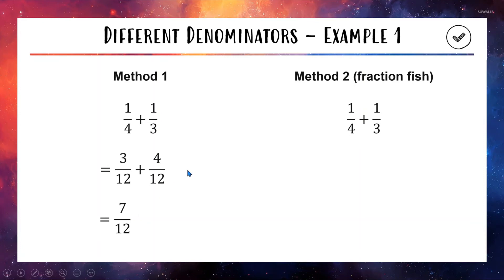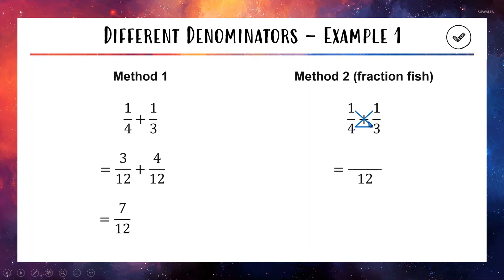If you're struggling with equivalent fractions, here's Method 2 — I call it the fraction fish, a kind of shortcut. You draw a shape that looks like a face-down fish over your fractions, with lines reminding you what to multiply. The fish face line does 4 times 3, giving you 12 on the bottom. The next line joins the 3 and the 1: 3 times 1 is 3 for the top left. Then with the plus sign, the last line gives 4 times 1 equals 4. Tidying up: 3 plus 4 is 7, so we get 7 out of 12 — the same answer.